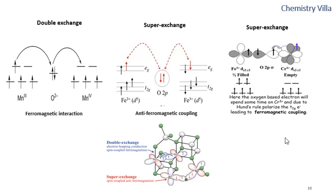In the other case, we can see that this electron and this electron are coupling ferromagnetically, which is why this is ferromagnetic coupling. So super exchange can be ferromagnetic or antiferromagnetic, and here the interacting metal ions can have the same oxidation state, as we can see with Fe3+ and Fe3+.